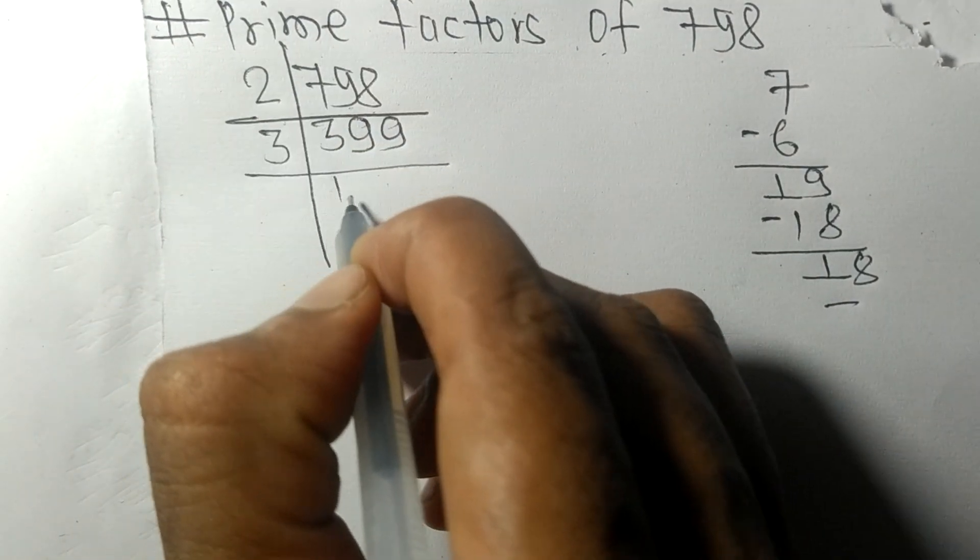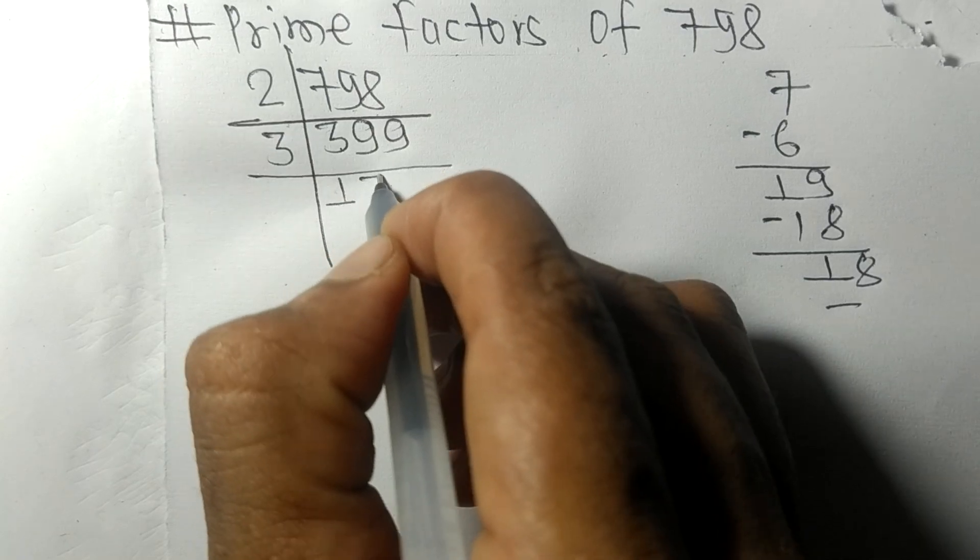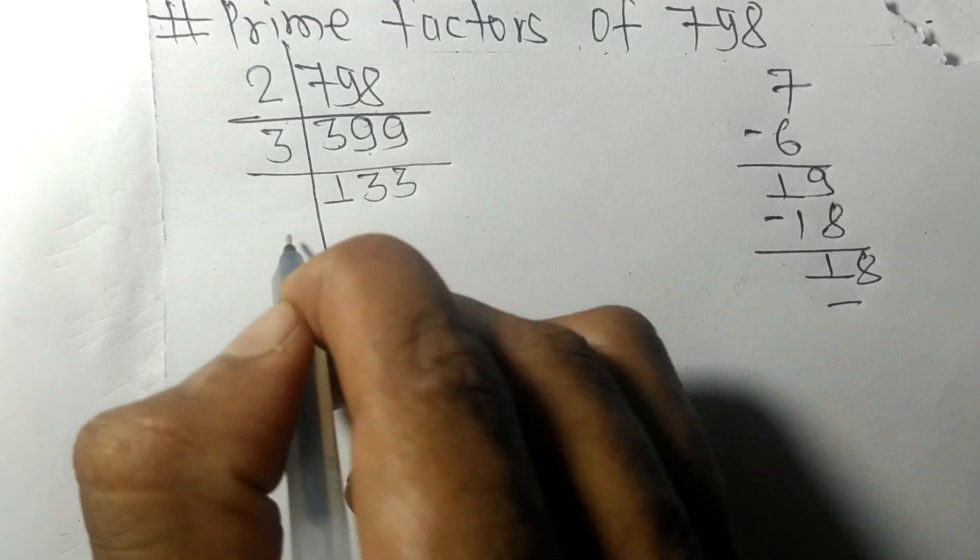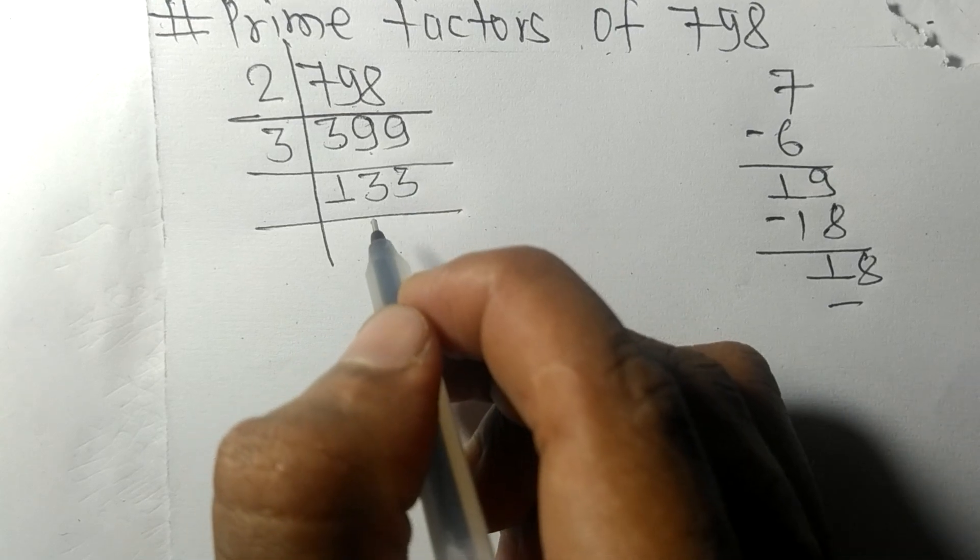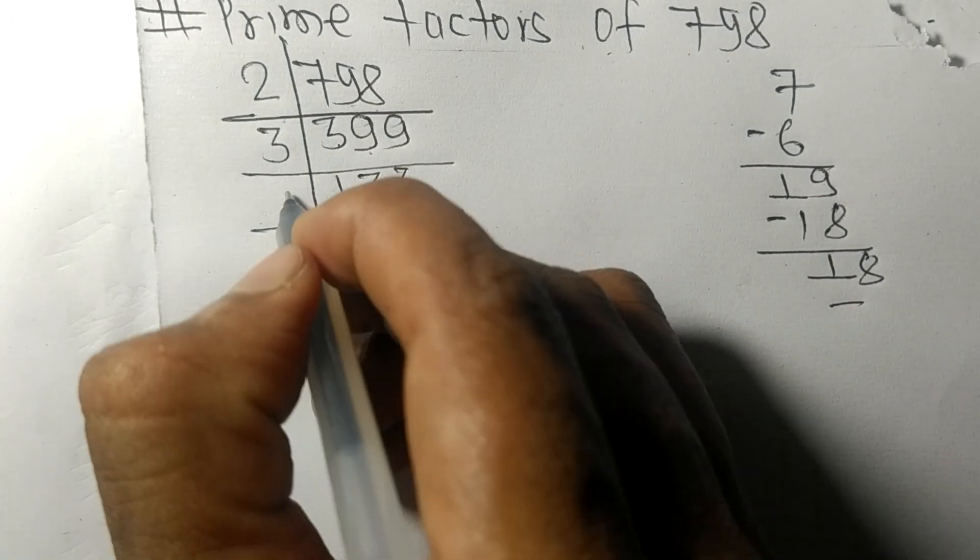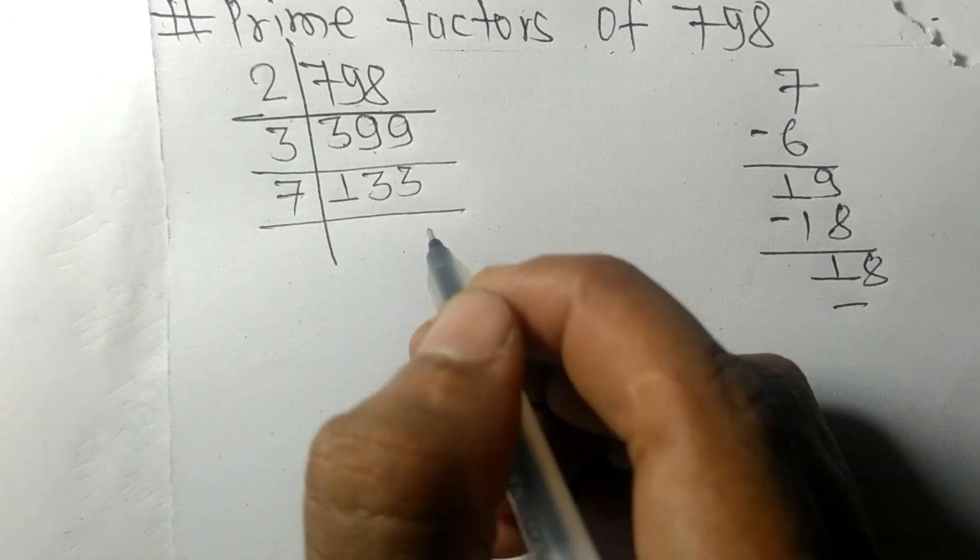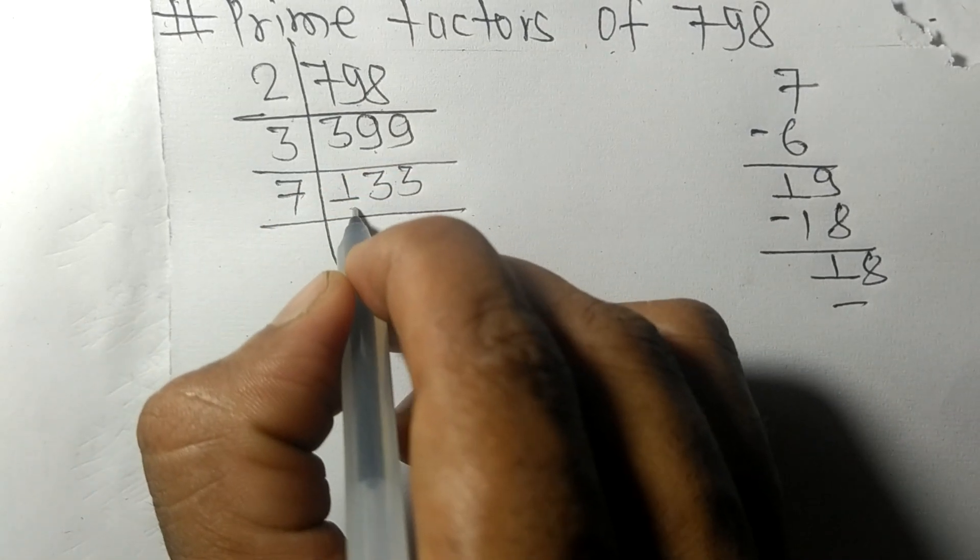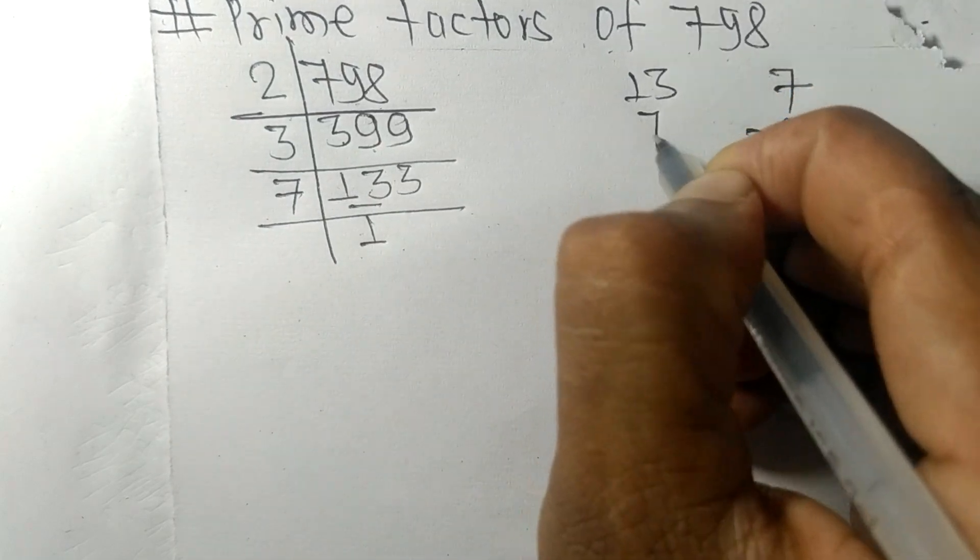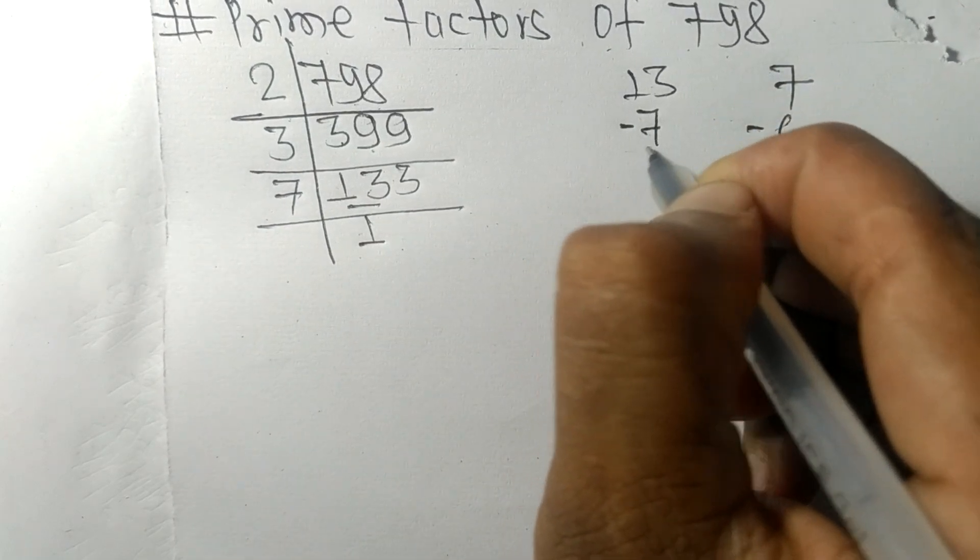133 which is exactly divisible by 7. First we have 13. 7 times 1 means 7, subtracting we get 6. Then this 3, 63. 7 times 9 means 63. So now we got 19 which is a